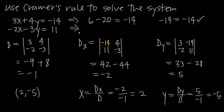For the second equation: negative 2 times 2 is negative 4, and then minus 3 times negative 5 — which is negative 15 — gives us minus a negative 15, or plus 15, equals 11. Simplifying the left-hand side: negative 4 plus 15 is 11, so we get 11 equals 11. That checks out as well, confirming that (2, negative 5) is a solution to this system of equations.